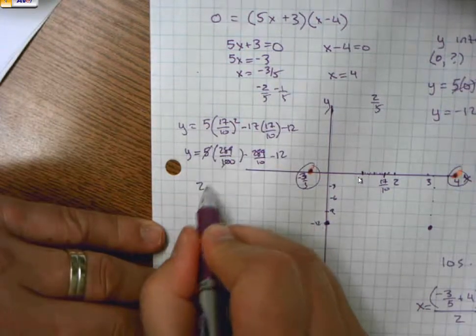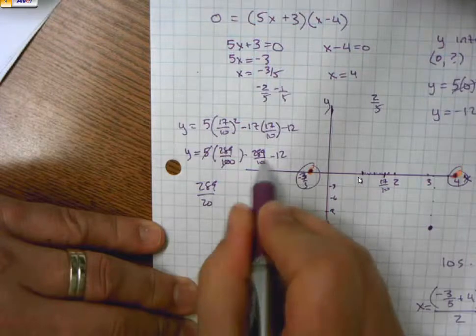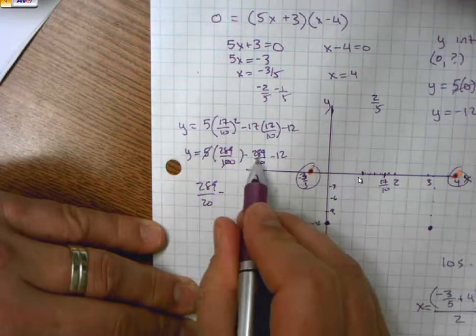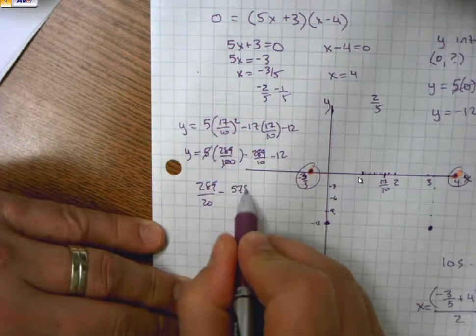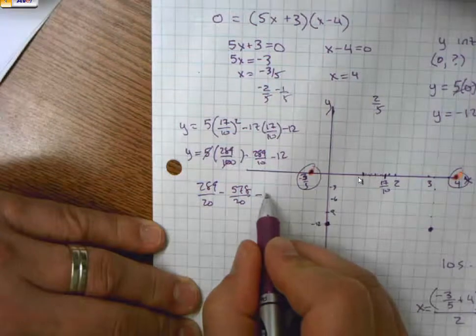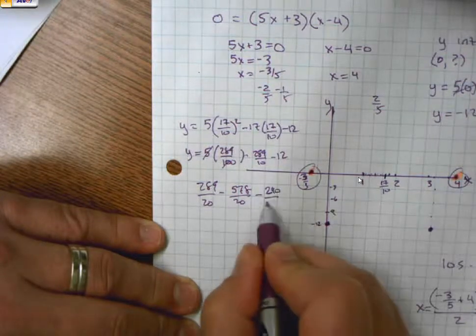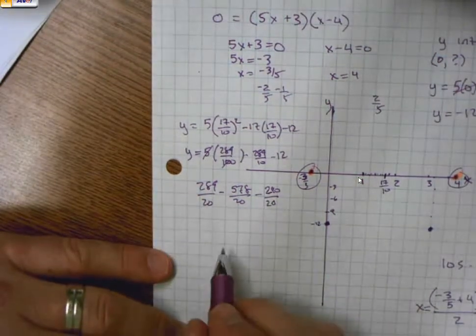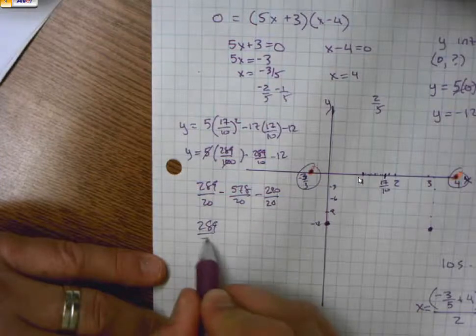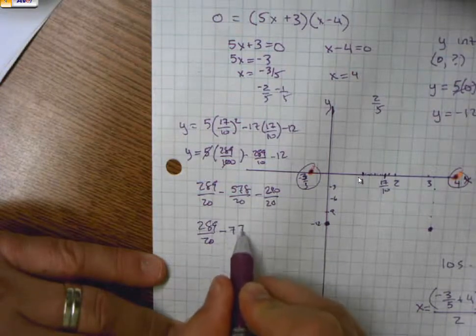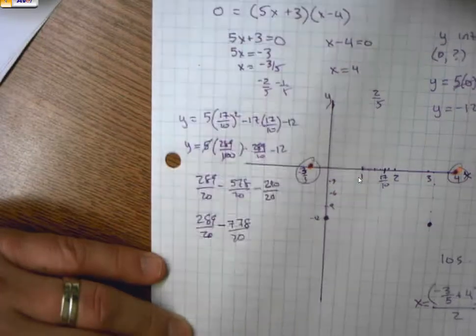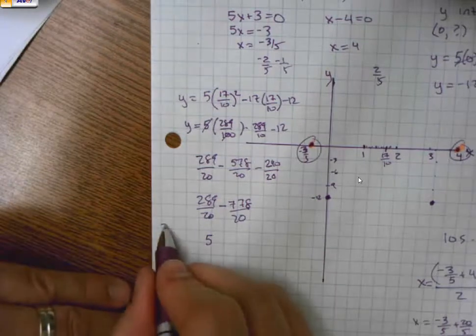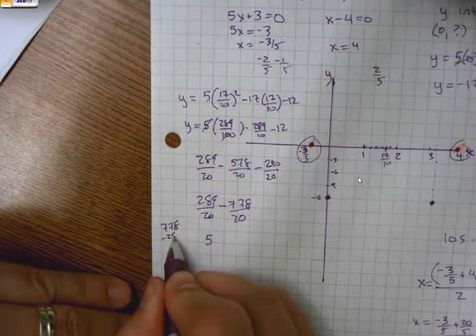So that cancels to make 289/20 and this is going to be, okay, so we'll put those into 20ths as well, which is 578/20. And this has to be a 20th, so it's minus 240/20. So these two combine them and make 289/20 minus 778/20, which means that together that makes 500 and...